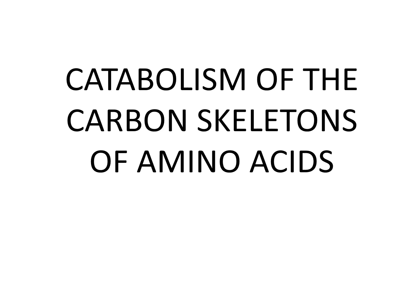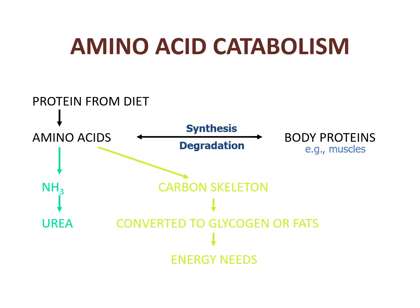Catabolism of the carbon skeletons of amino acids. Amino acid catabolism could mainly come from a protein diet being broken down into amino acids. Some would be excreted in the form of ammonia and the non-toxic urea. Some would be synthesized to body proteins, and some would have their carbon skeletons converted to glycogen or fats and serve as a source of energy.